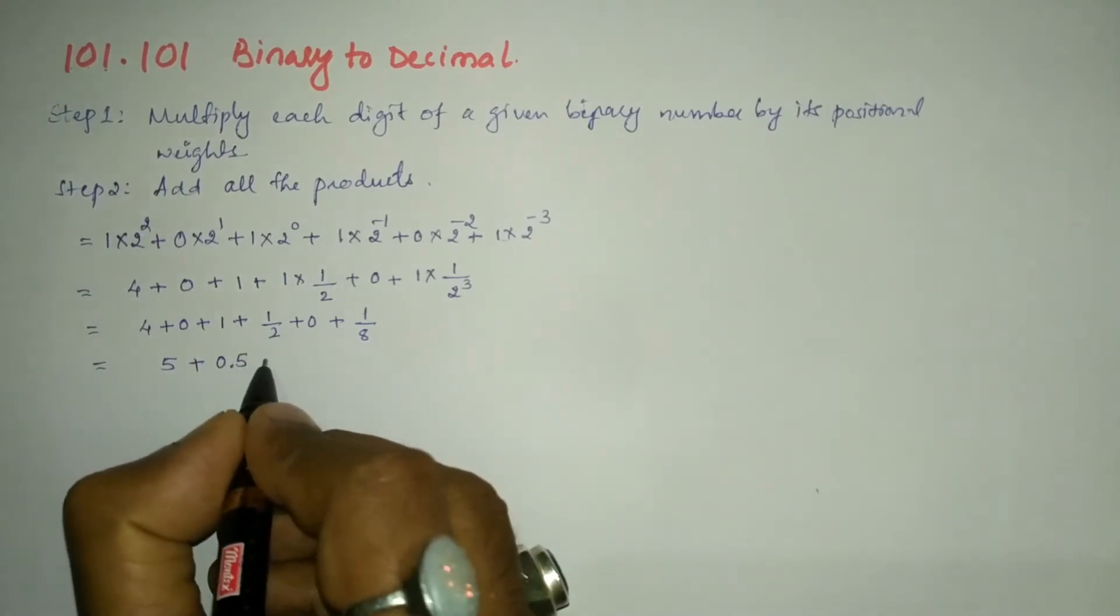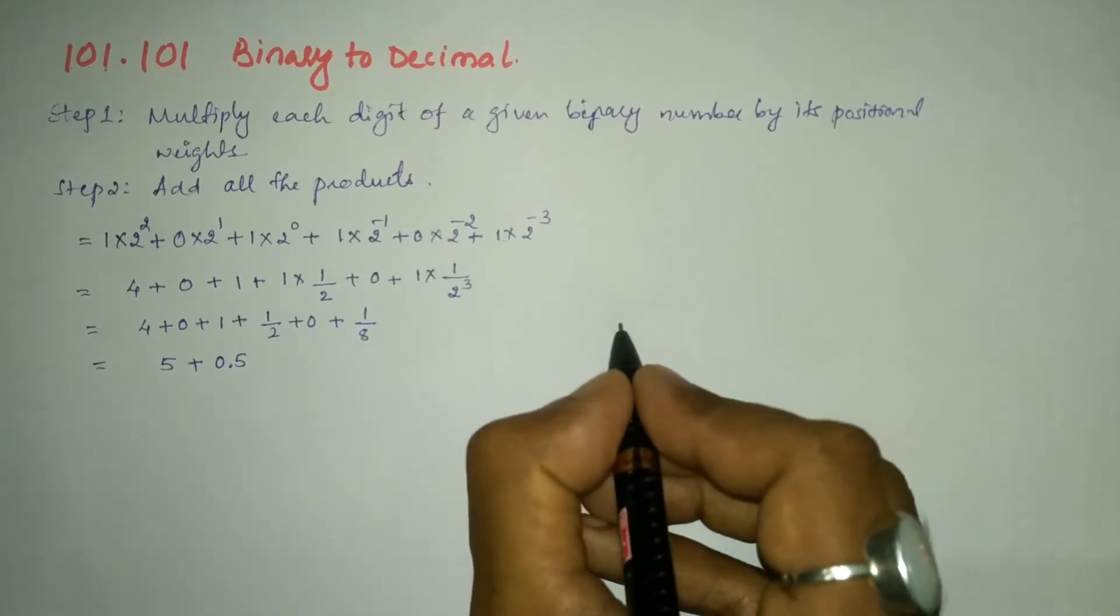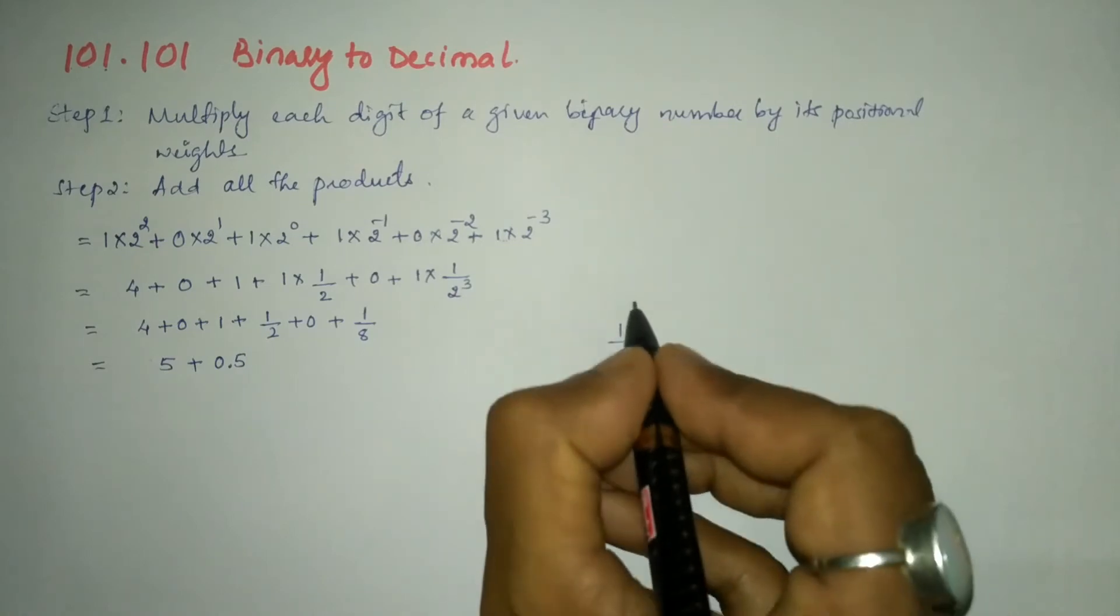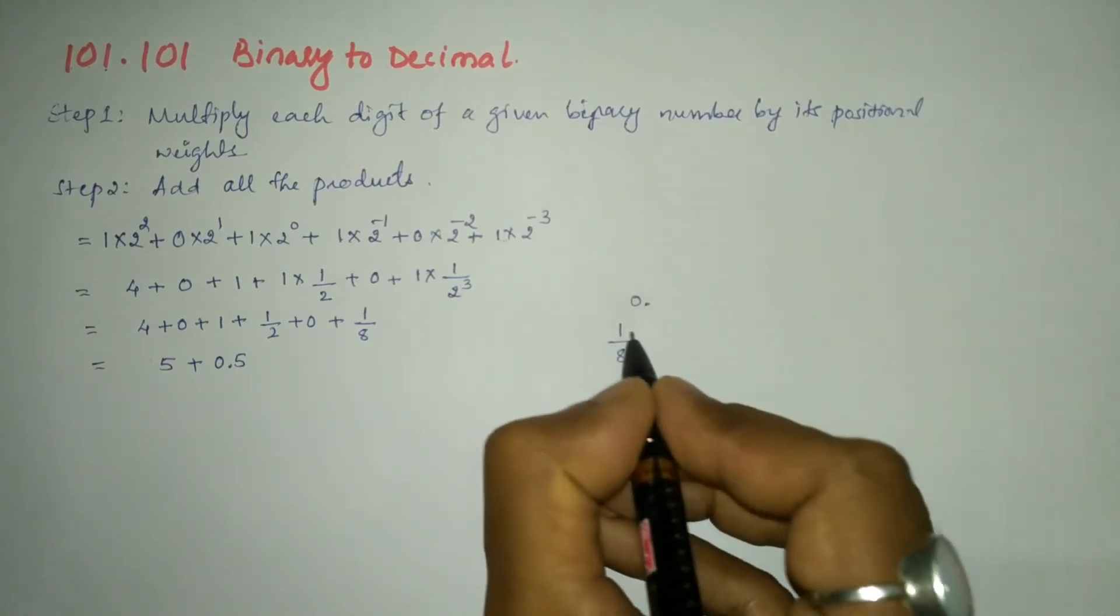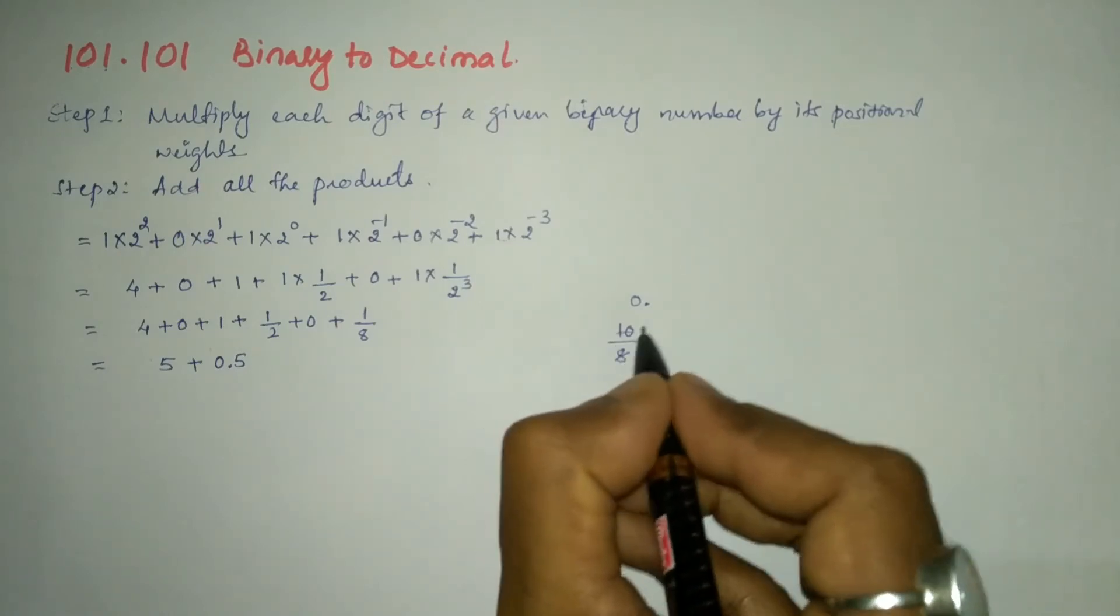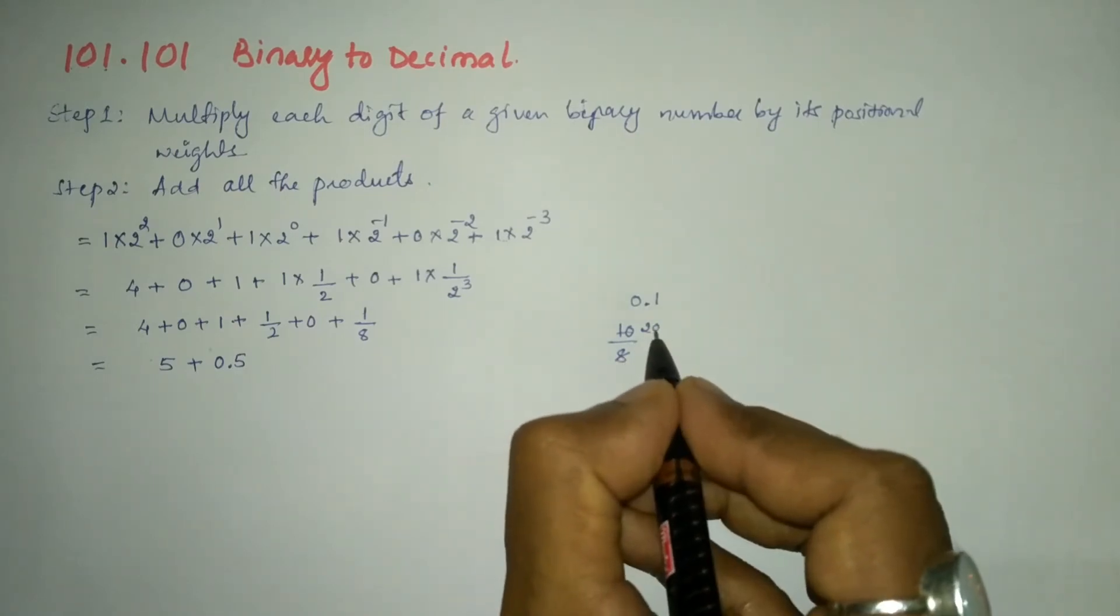Now we are going to simplify: 4 + 1 is 5, plus 1/2 can be written as 0.5. This 0 you leave it. 1 divided by 8, so let us divide 1 by 8. 1 cannot be divided by 8, we will take 0 point.